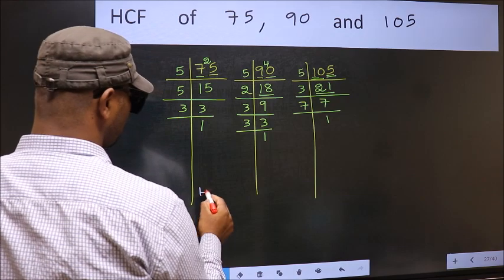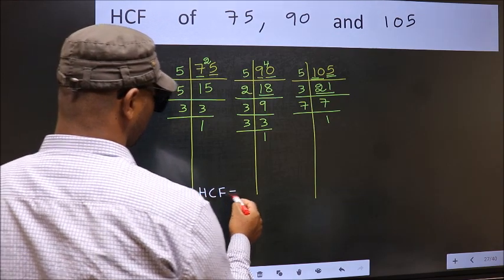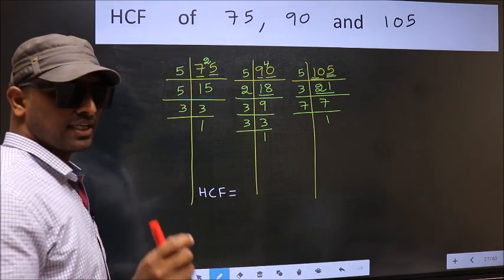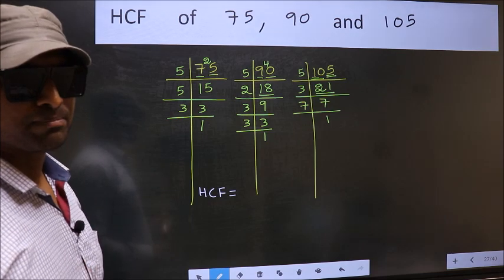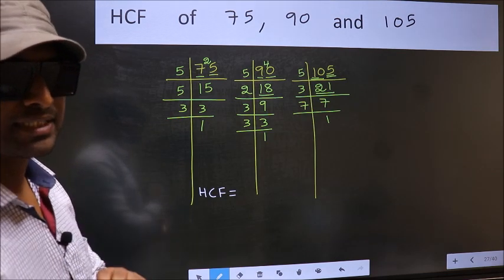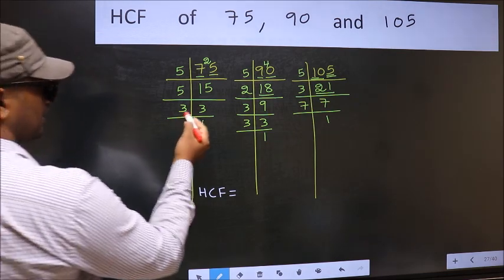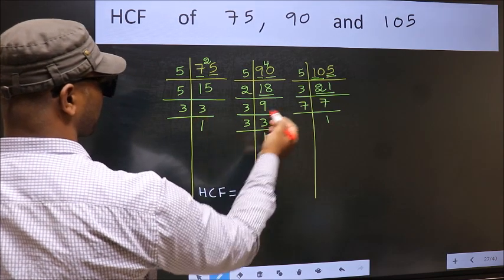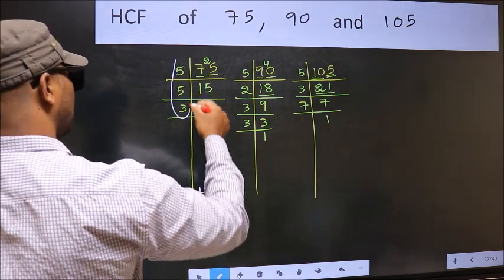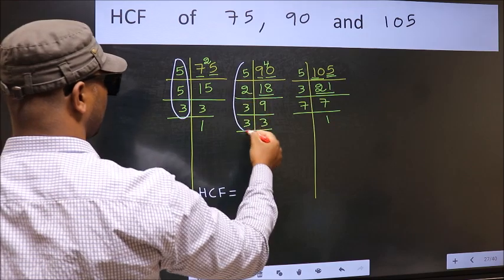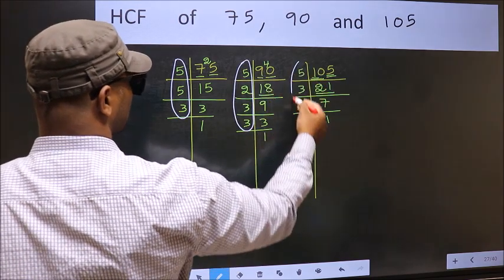Therefore, HCF is, HCF is the product of numbers which should be present in these 3 places. That is here, and here, and also here.